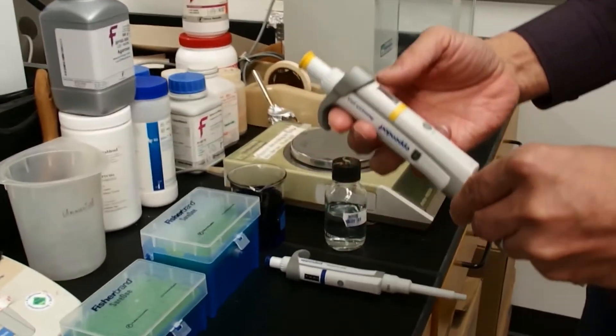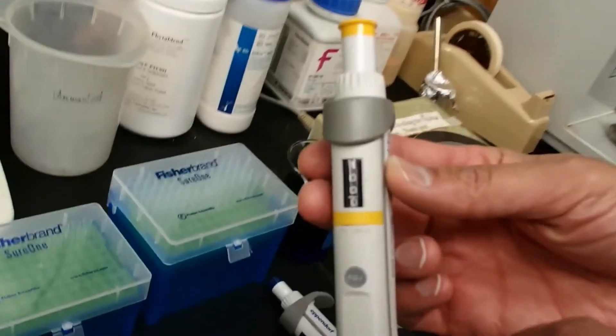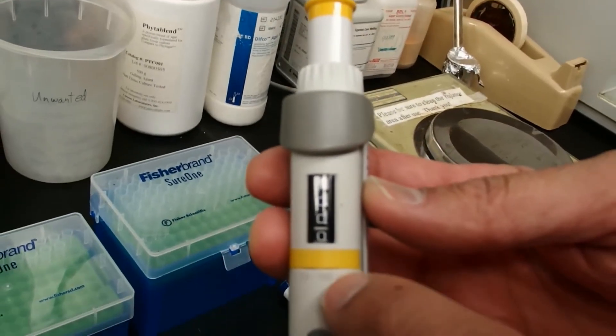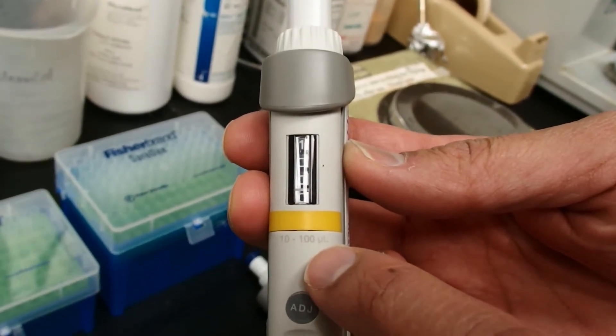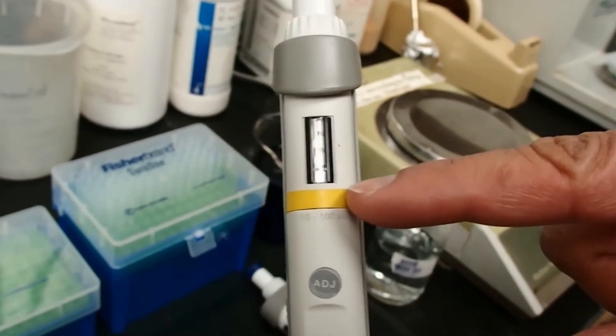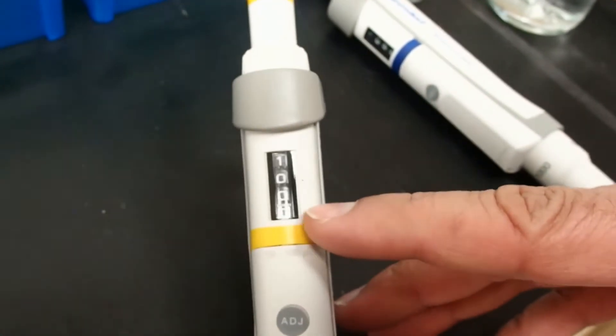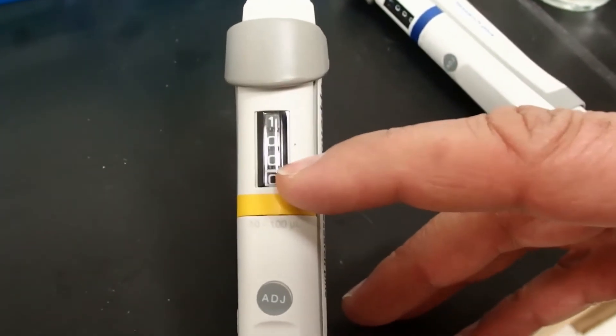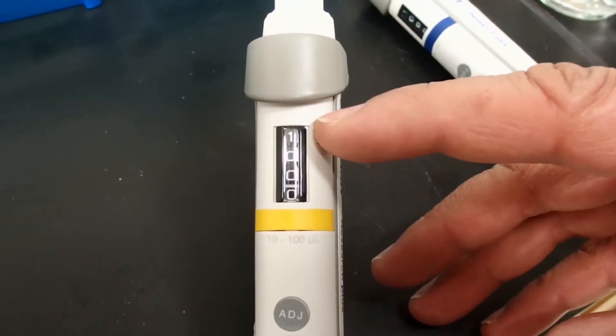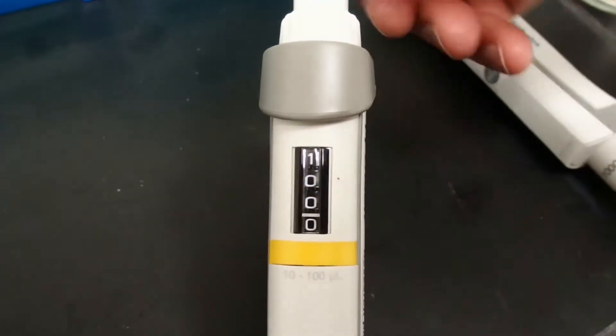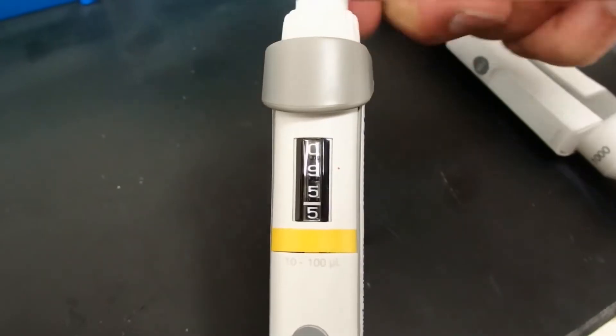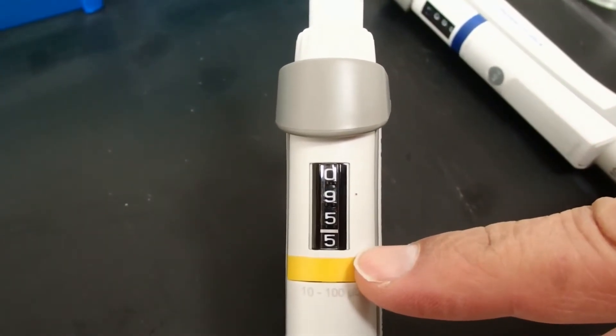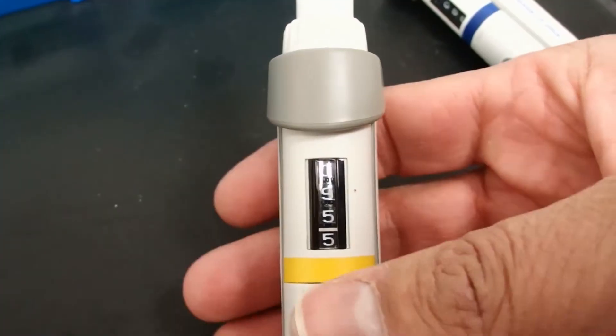The other pipettes have a different range. The P100 has a range of 10 to 100 microliters. They're written on them. Do not dial outside of that range. You'll notice that the P100 has a line right here. That line is basically like the decimal point. Right now, this reads 100.0. If I adjust it, you can see I can make it 95.5 microliters. Otherwise, the operation is pretty much the same.